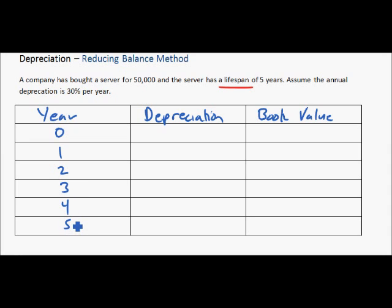In year zero, we really haven't even bought the asset yet, so the depreciation is zero and the book value is $50,000. If the book value is $50,000, we just bought it basically. So on the balance sheet, it would show $50,000 for the value of the asset.